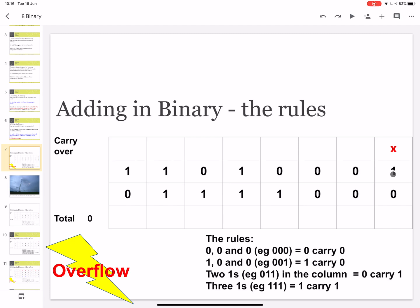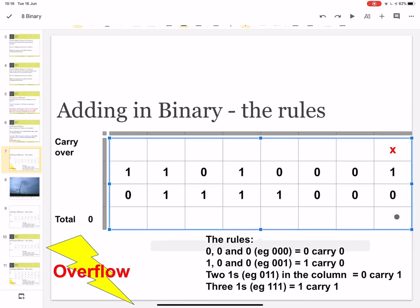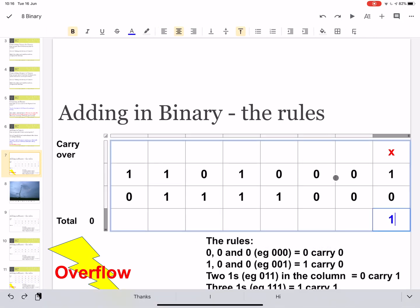We start by looking at our first column. So we have a 1 and a 0 in it. So we look down here at the rows, if we have 1, 1, and any number of 0s, we put 1 in the total and carryover 0 to the next column. So let's do that. So 1 there and carry 0.